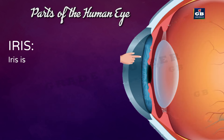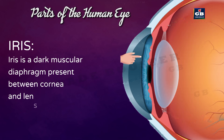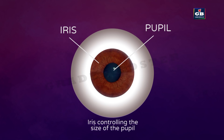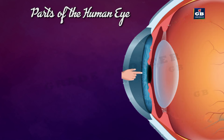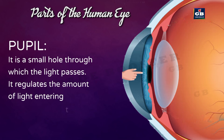Iris is a dark muscular diaphragm present between the cornea and lens. It controls the size of the pupil — it can make the pupil big and small. The pupil is a small hole through which light passes, and it regulates the amount of light entering the eye.